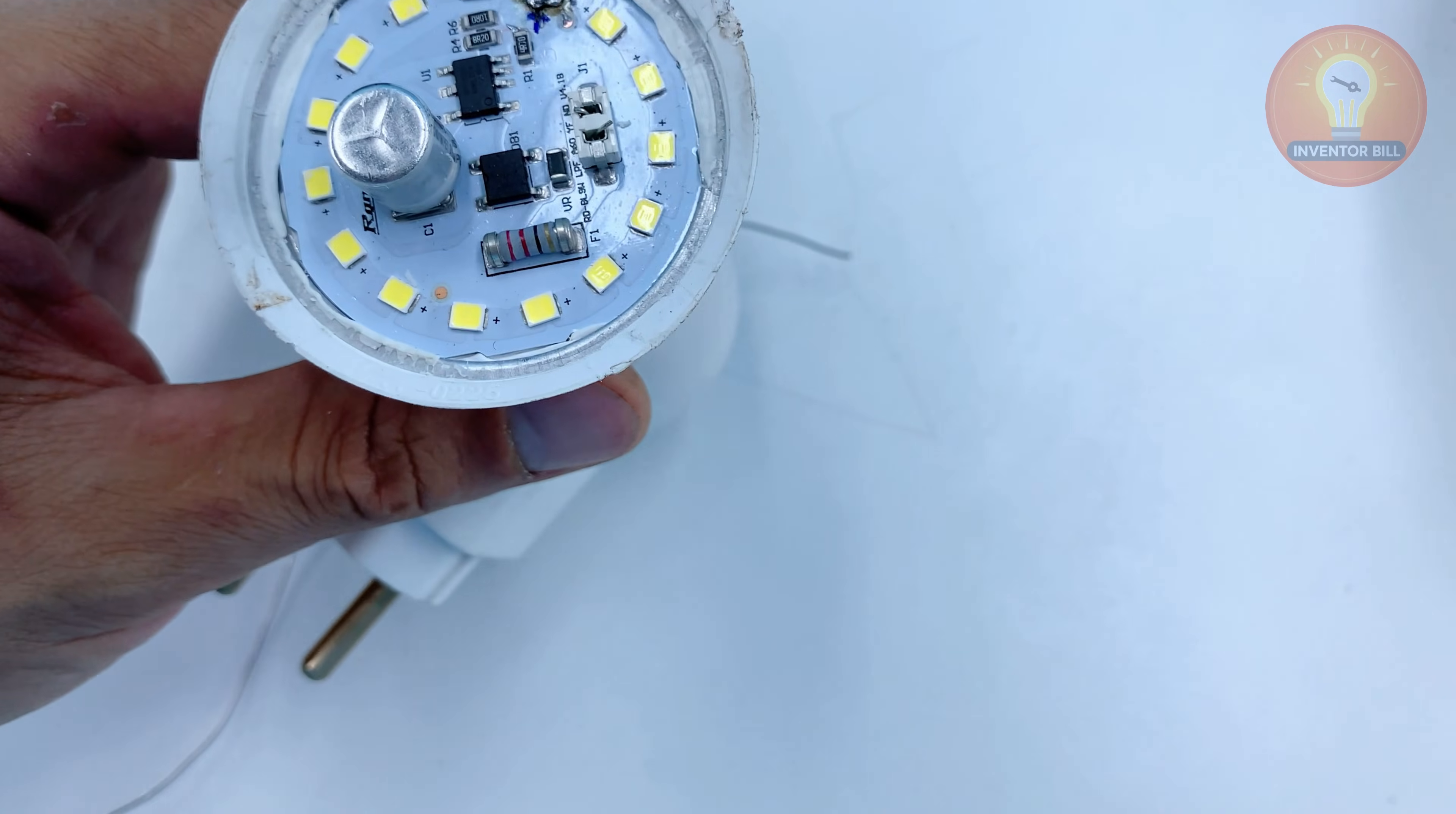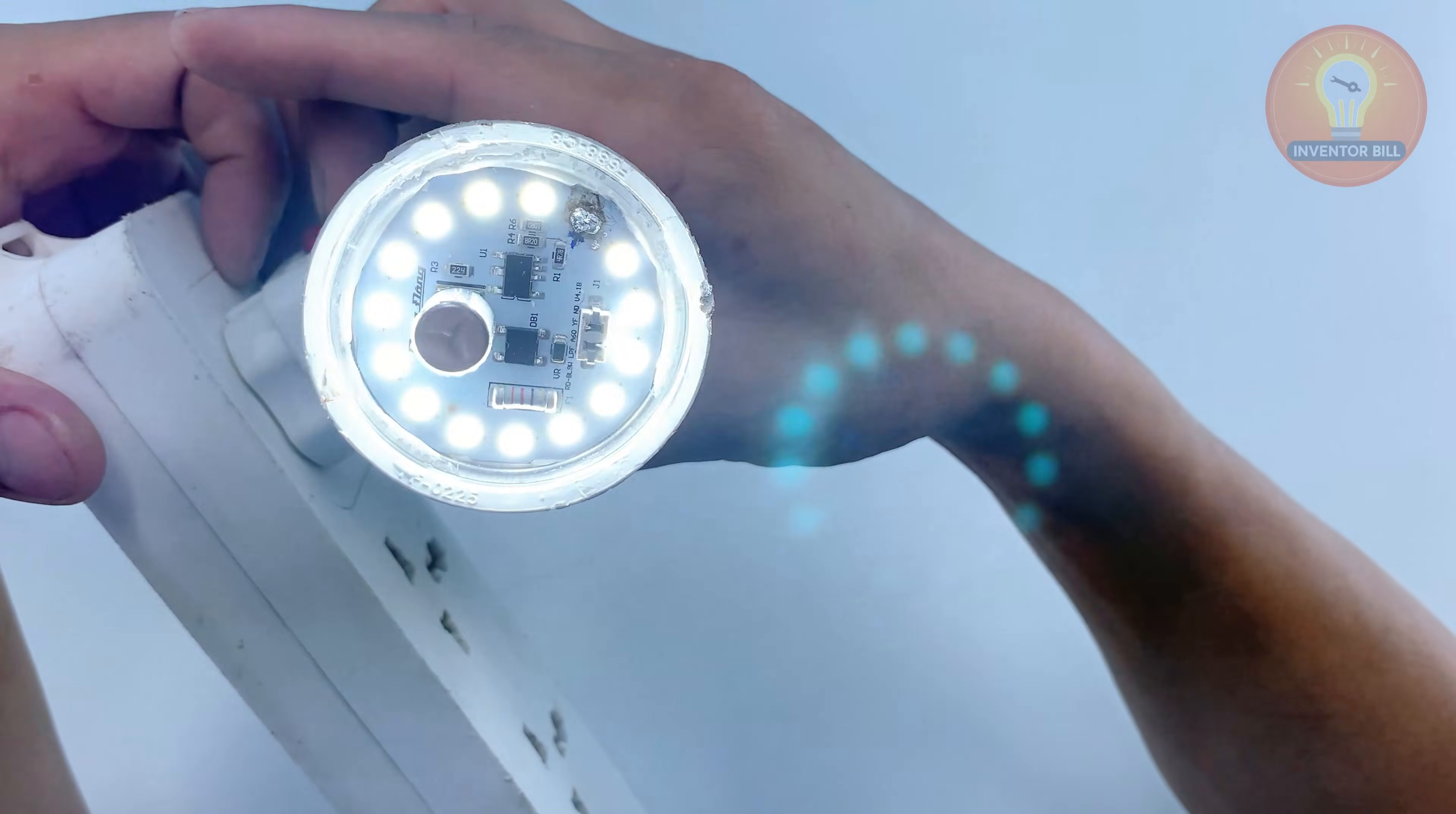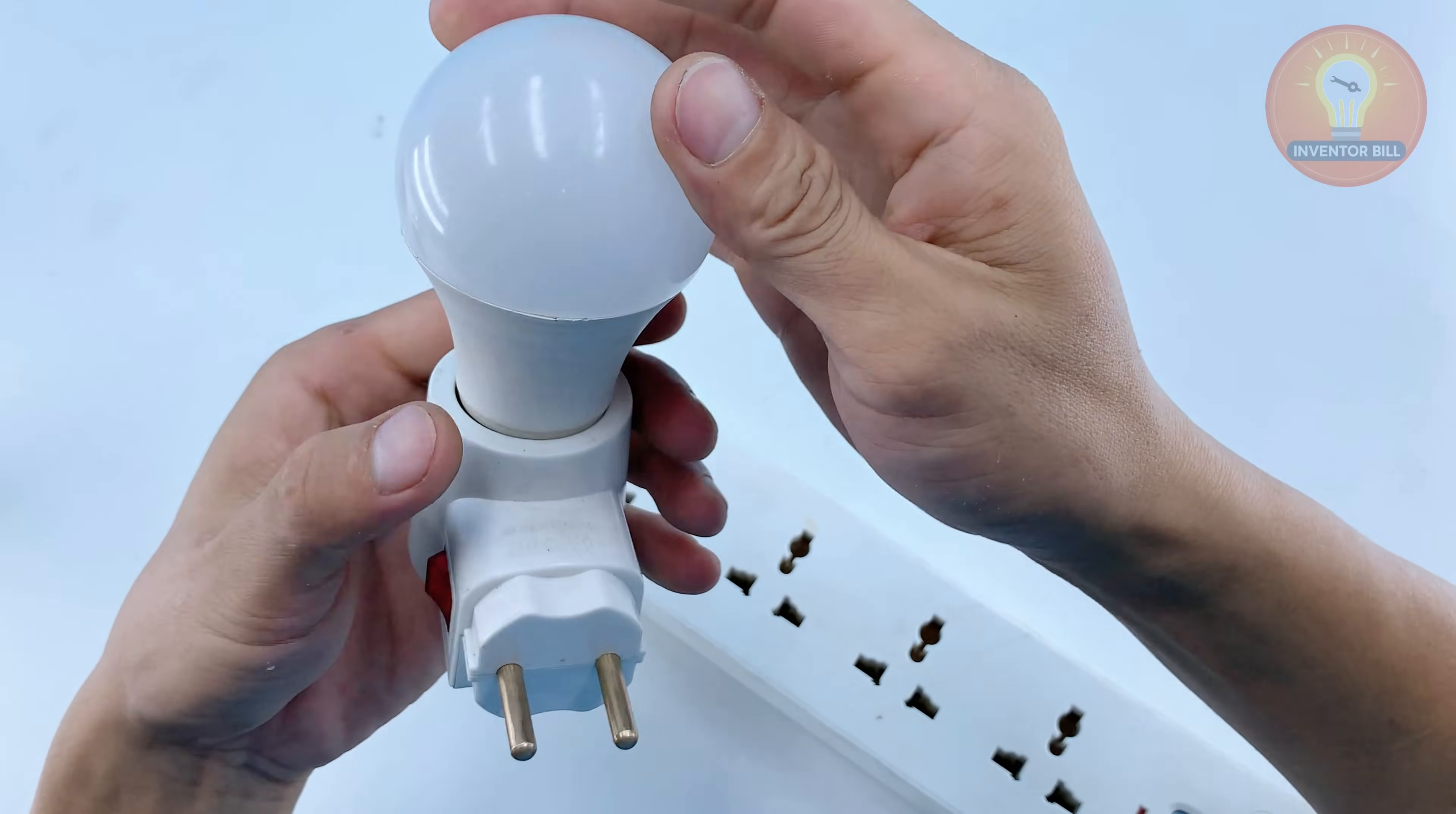Now that you've removed the faulty LED chip and cleaned the spot, you can put the bulb back together. Take a moment to look over the board and make sure the solder has cooled and settled properly. Once everything looks solid, place the board back into the housing and seat it the same way it came out. Press the cover on firmly so it locks into place.